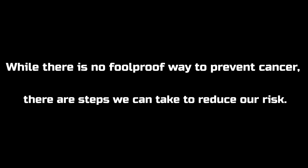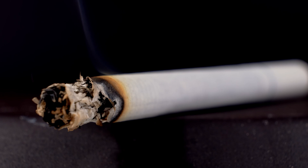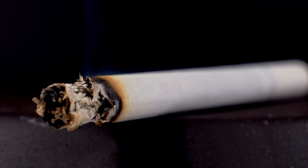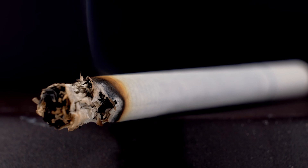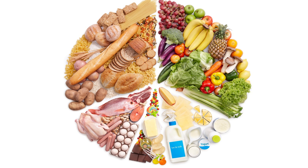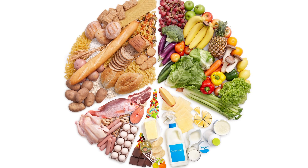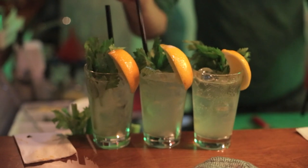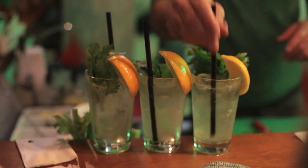While there is no foolproof way to prevent cancer, there are steps we can take to reduce our risk. Avoiding tobacco use — smoking and other forms of tobacco use are a major risk factor for many types of cancer, including lung, throat, and bladder cancer — can significantly reduce your risk. Eating a healthy and balanced diet that is high in fruits, vegetables, whole grains, and lean meats like chicken and fish, while being low in processed foods and red meat, has been shown to reduce the risk of several types of cancer. Limiting alcohol consumption can also lower your risk of breast, liver, and colorectal cancer.